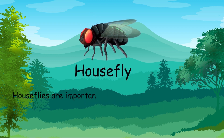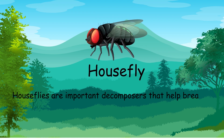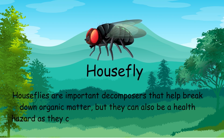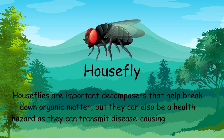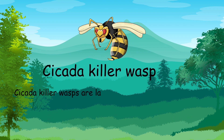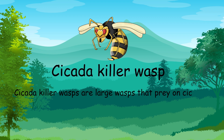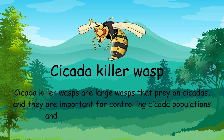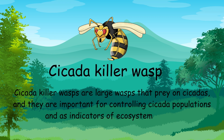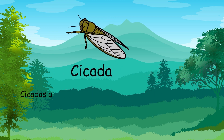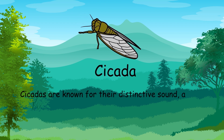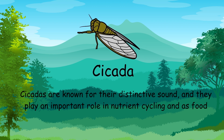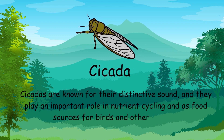Houseflies are important decomposers that help break down organic matter, but they can also be a health hazard as they can transmit disease-causing organisms. Cicada killer wasps are large wasps that prey on cicadas, and they are important for controlling cicada populations. Cicadas are known for their distinctive sound, and they play an important role in nutrient cycling and as food sources for birds and other animals.